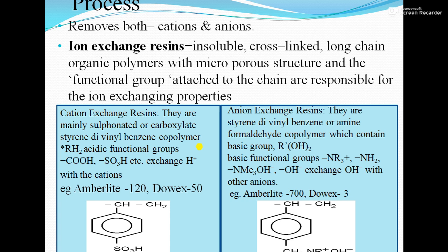The ion exchange process can remove both cations as well as anions. Anion exchange resins are insoluble, cross-linked, long-chain organic polymers with micro-porous structure, and the functional groups attached to the chain are responsible for ion exchanging properties. The resin has functional groups like SO₃H, carboxylate, NR₃⁺, NH₂, and R₃OH or OH. In short, if it is a cation exchanger resin, it is written as RH₂, and if it is an anion exchanger resin, it is written as R(OH)₂.